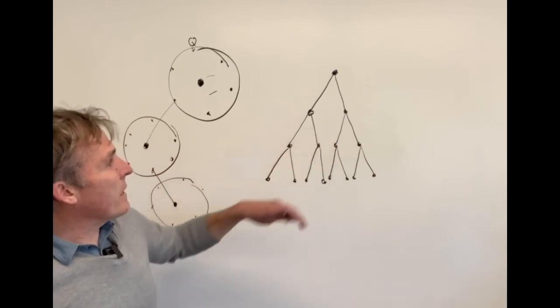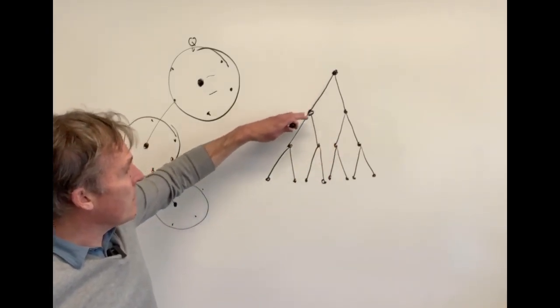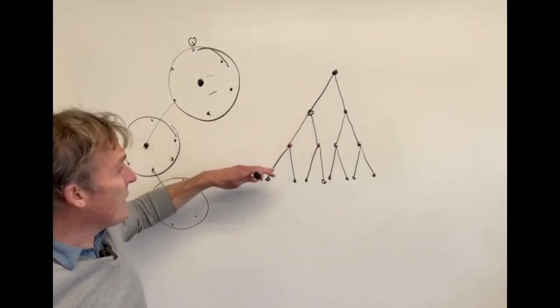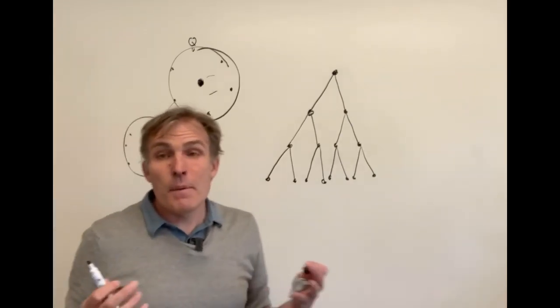So an R-naught of two would look like this over time. One case to two to four to eight over a period of maybe 10 days.